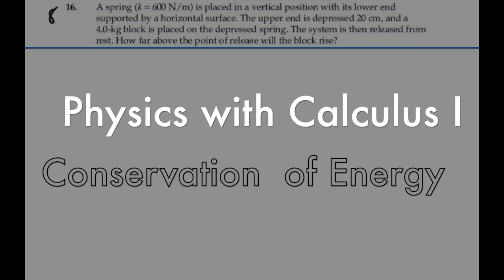Here's problem 8.16. A spring with spring constant 600 newtons per meter is placed in a vertical position with its lower end supported by a horizontal surface. The upper end is depressed 20 cm, and a 4 kg block is placed on the depressed spring. The spring is then released from rest. How far above the point of release will the block rise?